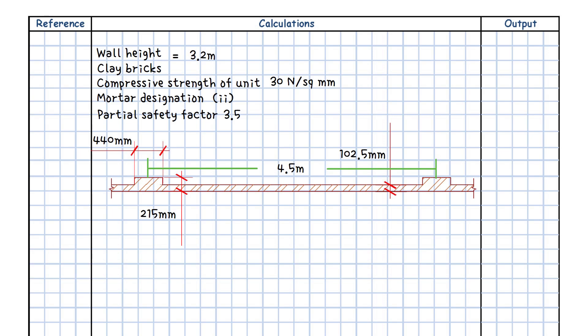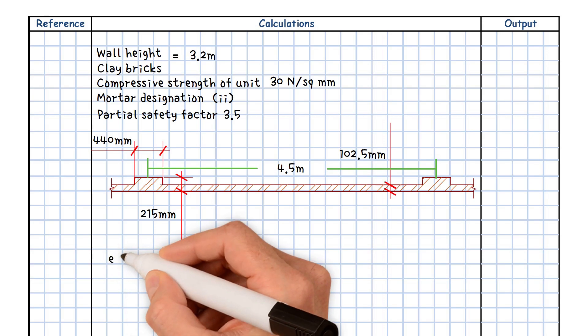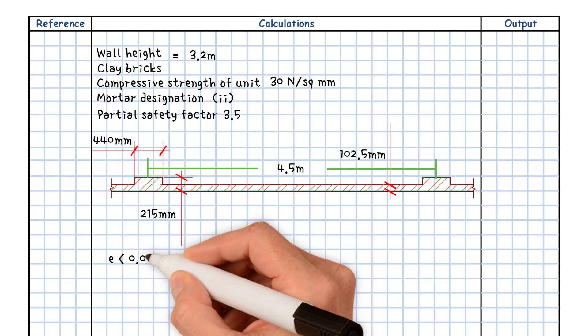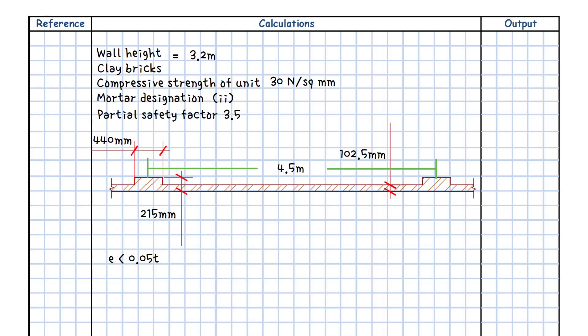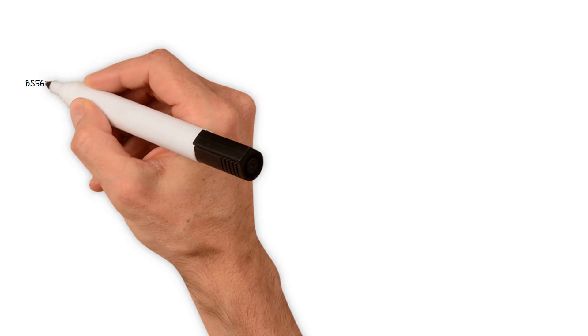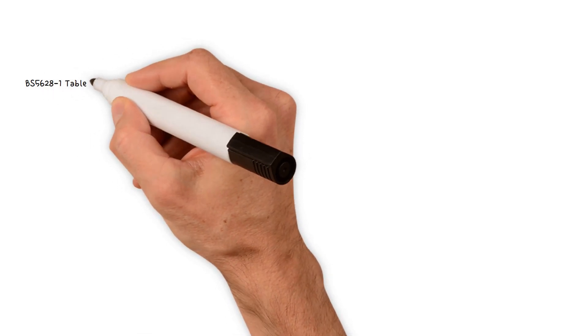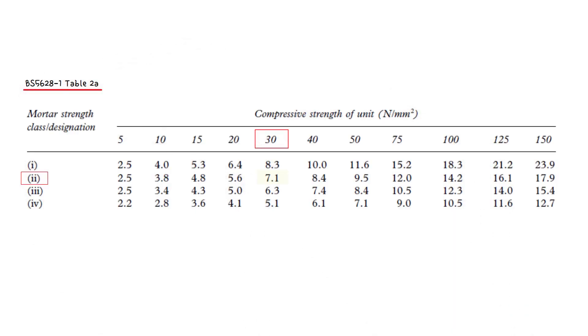In this example, we will assume that the eccentricity of the applied load is less than 0.05 t. Since the compressive strength of the bricks is 30 newton per square millimeters, we get that characteristic compressive strength from BS 56281, table 2A, which equals 7.1 newton per square millimeters.